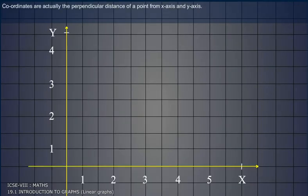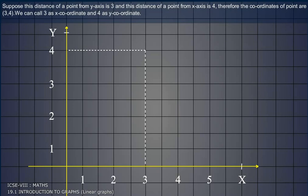Coordinates are actually the perpendicular distance of a point from x-axis and y-axis. Suppose this distance of a point from y-axis is 3 and this distance of a point from x-axis is 4. Therefore, the coordinates of the point are (3, 4). We can call 3 as the x-coordinate and 4 as the y-coordinate.